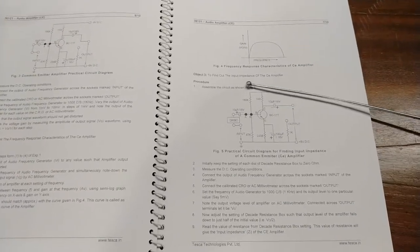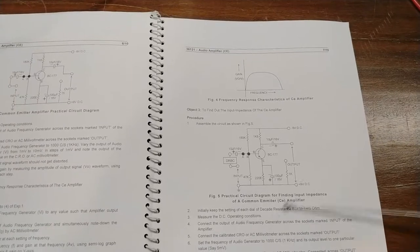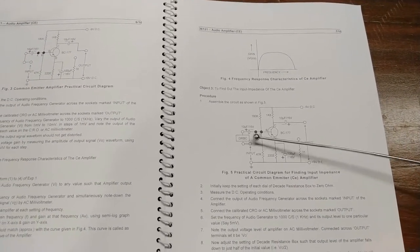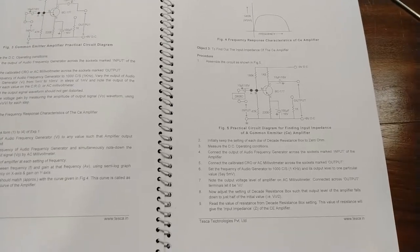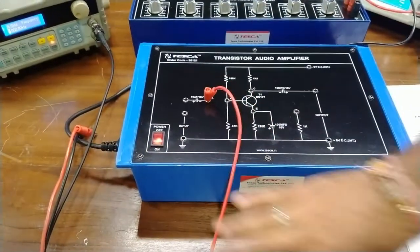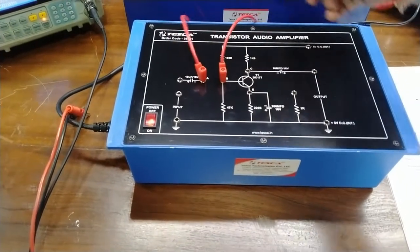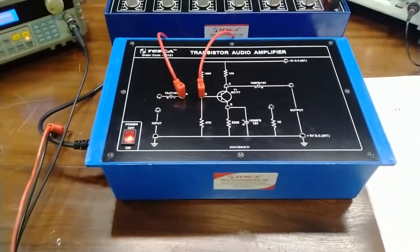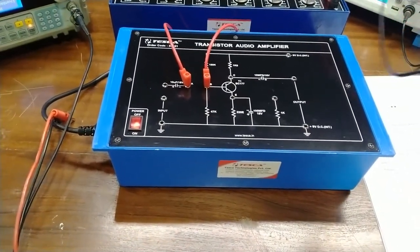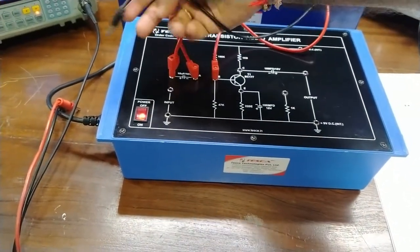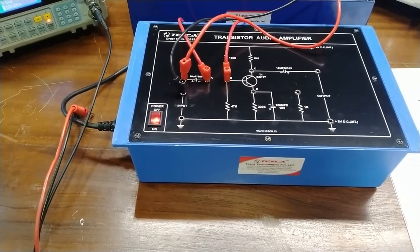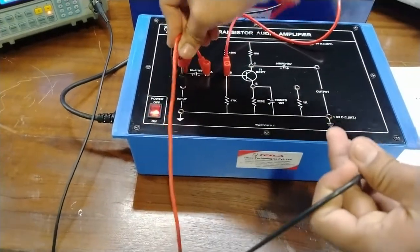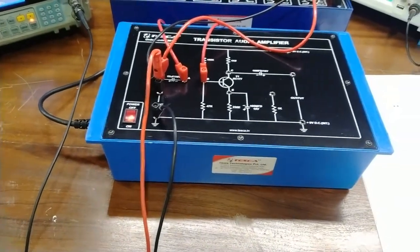Now we move on to the next experiment, which is to find the input impedance of the common emitter amplifier. For this we will connect point A to point B, and we also introduce the decade resistance box at the input terminal. We provide the input from the audio frequency generator. We connect the A point to the B point with the patch cord, then introduce the decade resistance box at the terminal given in the user manual. We connect the function generator's output at this terminal, which resembles the circuit as given in the user manual.